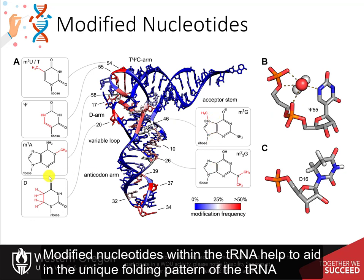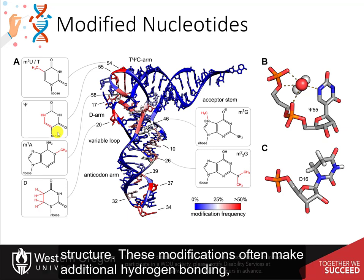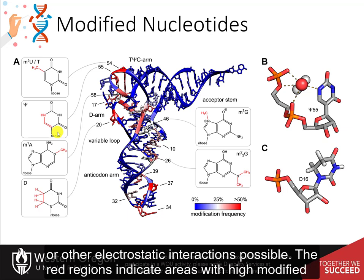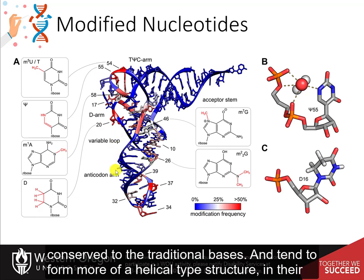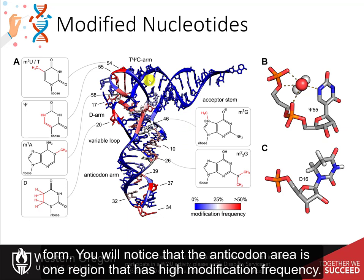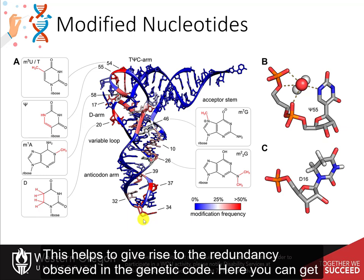Modified nucleotides within the tRNA help to aid in the unique folding pattern of the tRNA structure. These modifications often make additional hydrogen bonding or other electrostatic interactions possible. The red regions indicate areas with high modified nucleotides, while the blue areas are more conserved to the traditional bases and tend to form more of a helical-type structure. The anticodon area is one region that has high modification frequency, which helps to give rise to the redundancy observed in the genetic code.